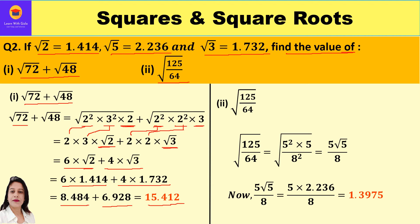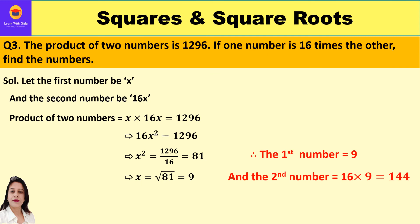For part two, √(125/64): 125 = 5² × 5 and 64 = 8². Taking out factors from each pair gives 5√5 / 8. Since √5 = 2.236, this becomes 5 × 2.236 / 8 = 1.3975.